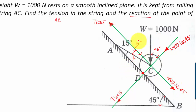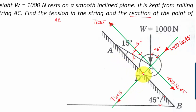We have all forces worked out: tension T and 1000 Newtons. Now this roller is in contact with the smooth inclined plane at point D, and hence there is going to be a reactive force at D in that direction. Let the reaction at D be represented by R.